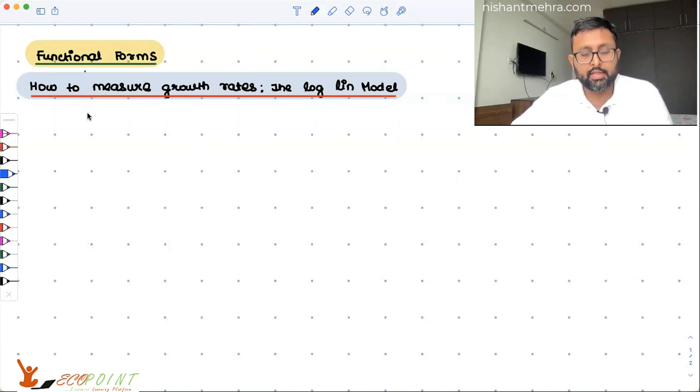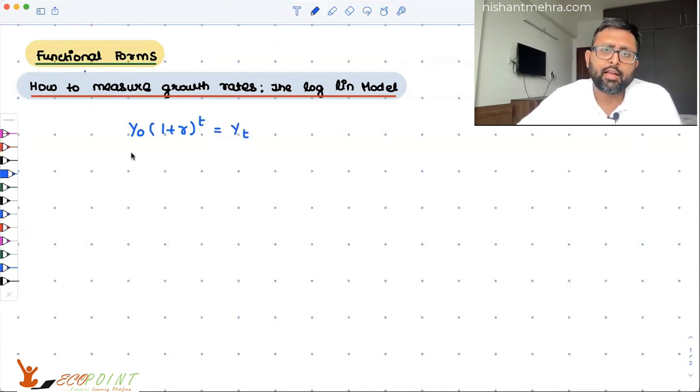So this model is generally used to measure growth rates. We'll say that there is an initial value of y, and this is growing at the rate r. And we are calculating it for time period t, for these many time periods, and this is going to give me the value yt.